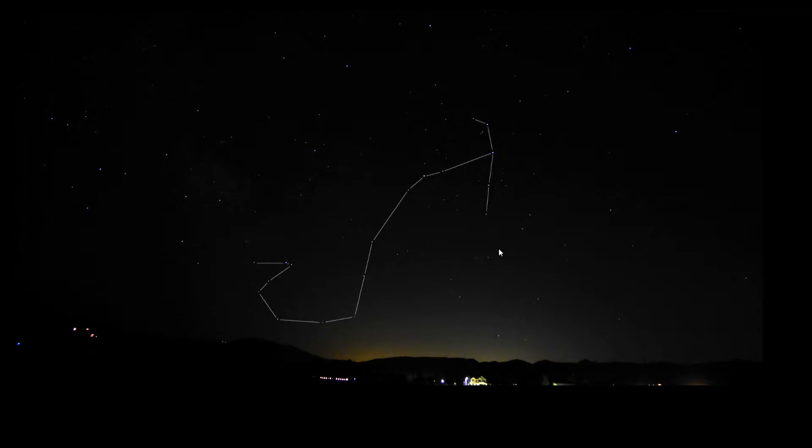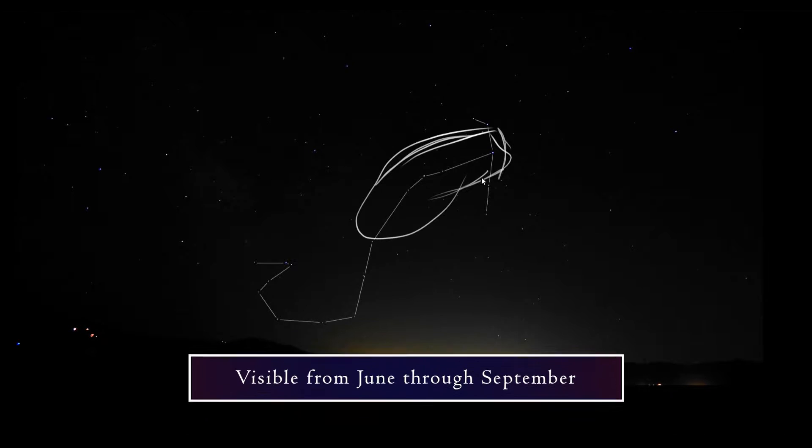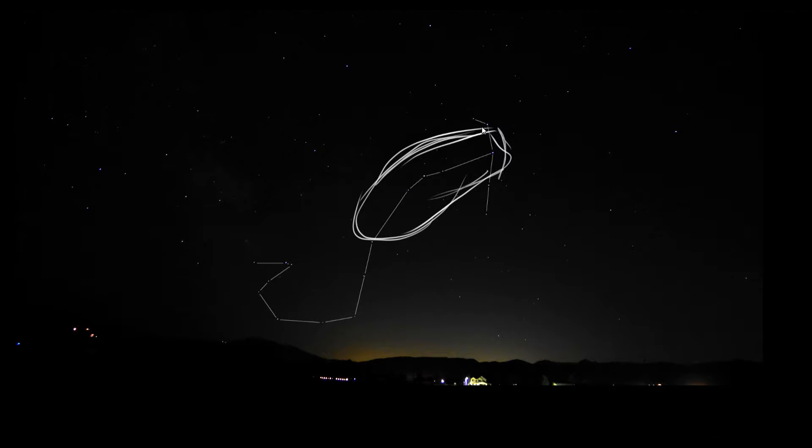Scorpius shows up during the summer months, late June through September. If you live in the Northern Hemisphere, the ecliptic gets so low in the summer that Scorpius isn't around for as long as most of the other zodiacal constellations, before it dips back below the horizon again.